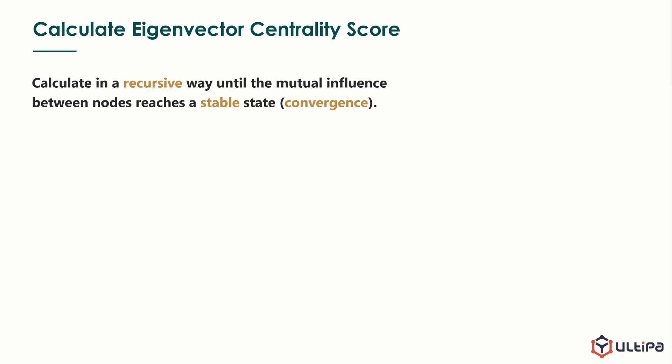Since the centrality of a node would affect its neighbors, and in turn centrality of neighbors would affect the node, eigenvector centrality needs to be calculated in a recursive way until the mutual influence between nodes reaches a stable state, and we call this tendency convergence.